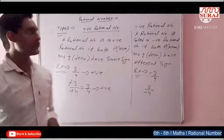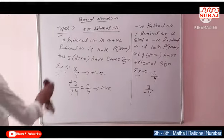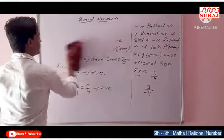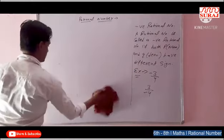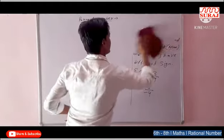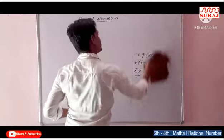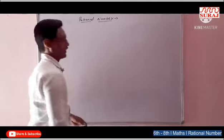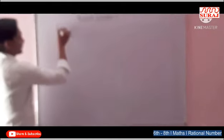Next topic is representation of rational numbers on the number line. That's what we are going to do next. We will also cover positive, negative, multiplication and division. The third part is representation of rational numbers on the number line.